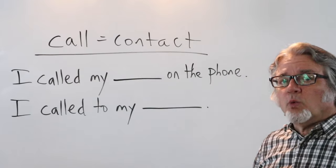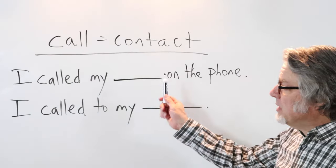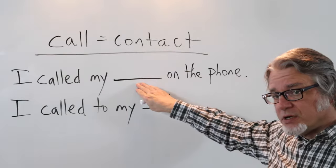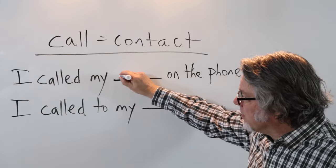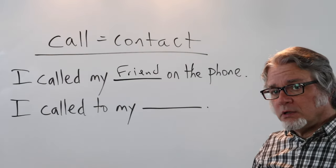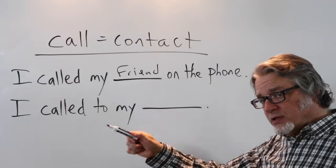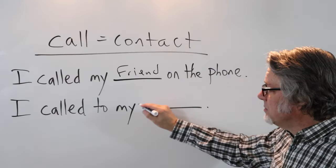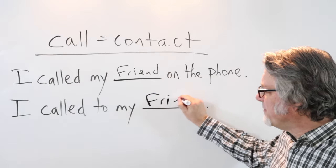Use 'call' when trying to contact someone. If it's by phone, you'd say: 'I called my friend on the phone.' But if it's in person and you can see the person in the distance, then use 'to': 'I called to my friend.'